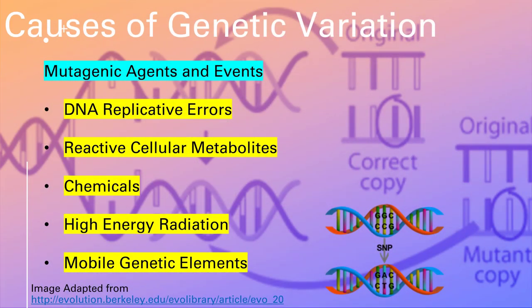First, we start by defining genetic variation. Genetic variation is the difference in DNA sequences between individuals within a population. Mutations and recombination are major sources of variation. Somatic mutations can accumulate in our cells and are mostly harmless. Only variation that arises in germ cells can be inherited from one individual to another.